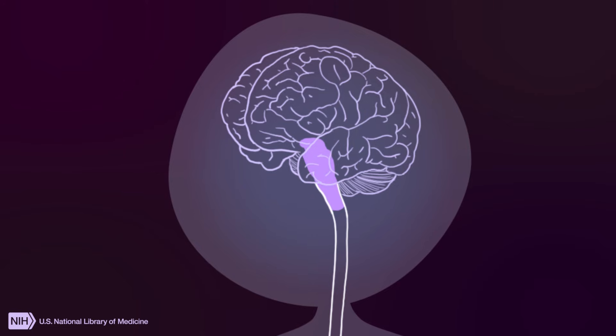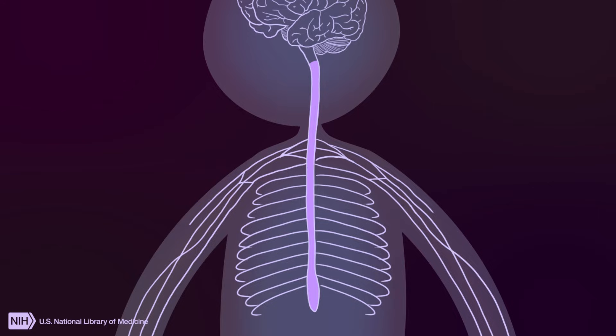In the brainstem, opioids relax breathing and reduce cough. In the spinal cord and peripheral nerves, opioids slow down pain signals.